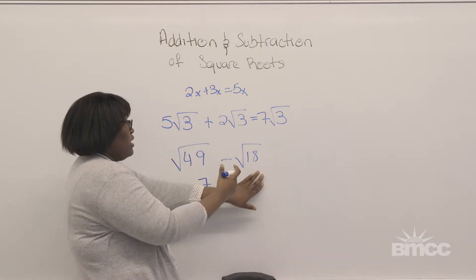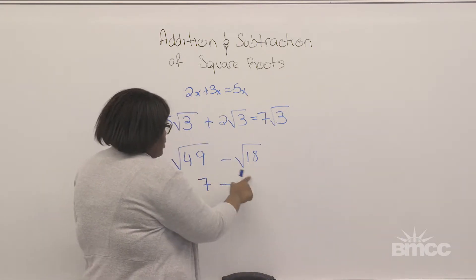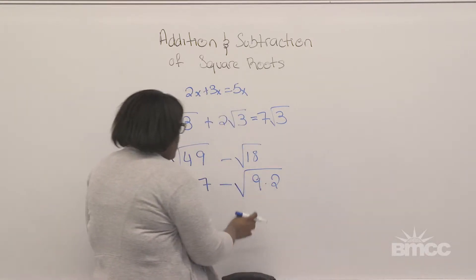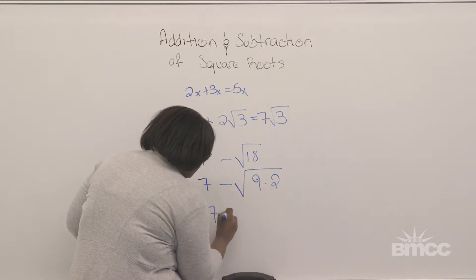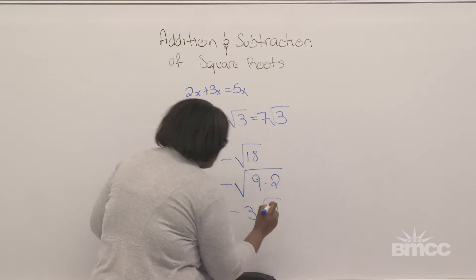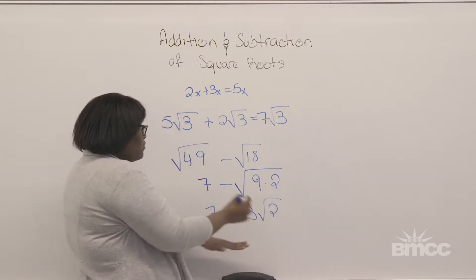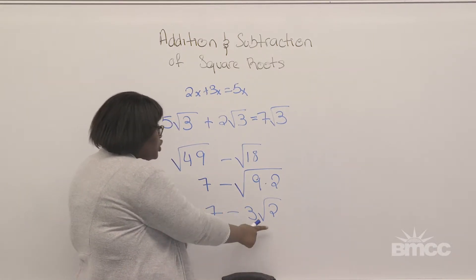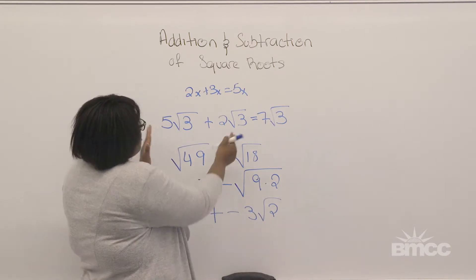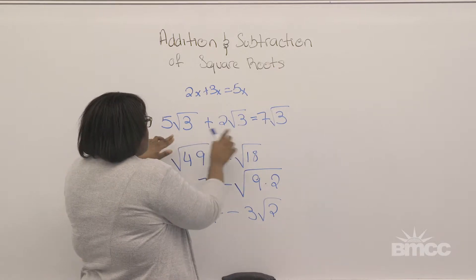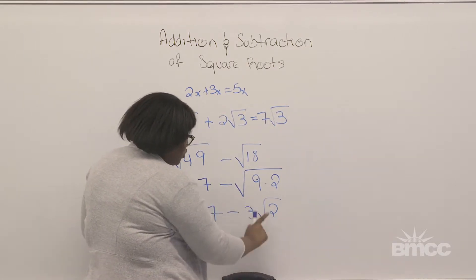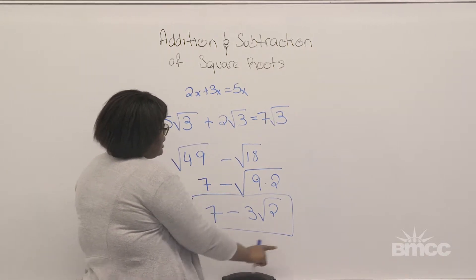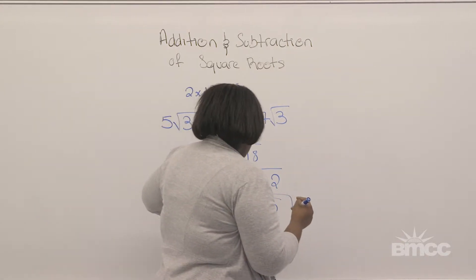Now, 18 is not a perfect square, but it can be reduced. We're going to rewrite it using its perfect square factor: the square root of 9 times 2, which gives us 3 times the square root of 2. As you can see, this expression doesn't have a radical 2 behind the 7. Unlike the first example where both expressions had radical 3, here radical 2 is only in one expression. So we cannot subtract 3 from 7 — we have to leave it as is. That would be our final answer.